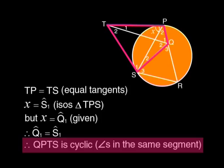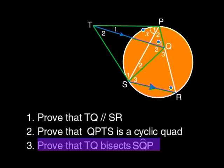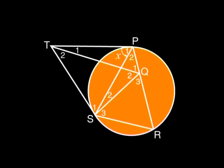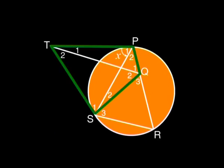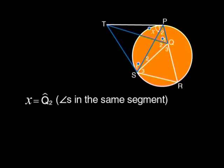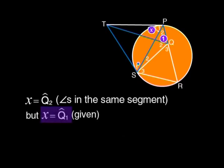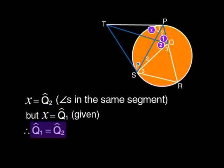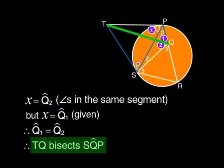Cool. That takes care of the second part of the question. Now let's do the last part. Prove that TQ bisects SQP. It's easy to do if you use the fact that QPTS is cyclic. Because angle x equals angle Q2 because there are angles in the same segment. And we already know that x also equals Q1. So that means Q1 equals Q2, and so TQ bisects angle SQP.